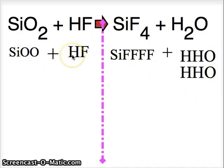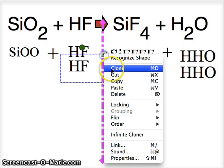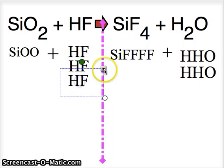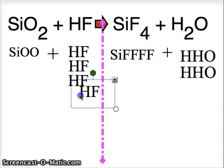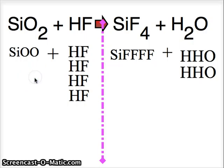One hydrogen, four hydrogen. So I need another one. And another one. And another one. Got to make four. Start again. One silicon, one silicon. Two oxygen, two oxygen. Four hydrogen, four hydrogen. Four fluorine, four fluorine.